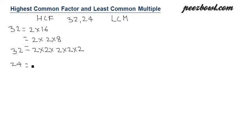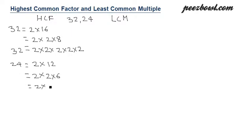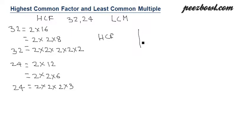For 24, we write it as 2 multiplied by 12, then 12 breaks down further as 2 multiplied by 6, and 6 is written as 2 multiplied by 3. So these are the prime factors of 24.